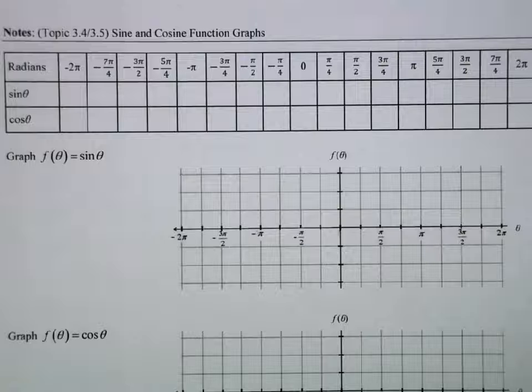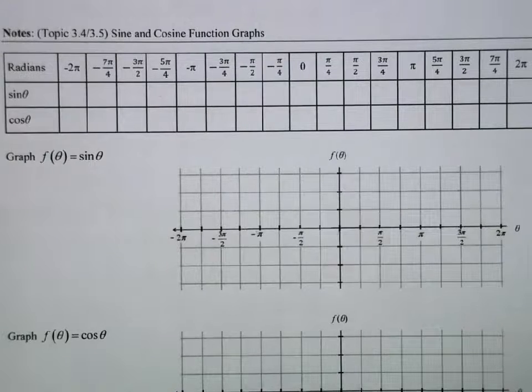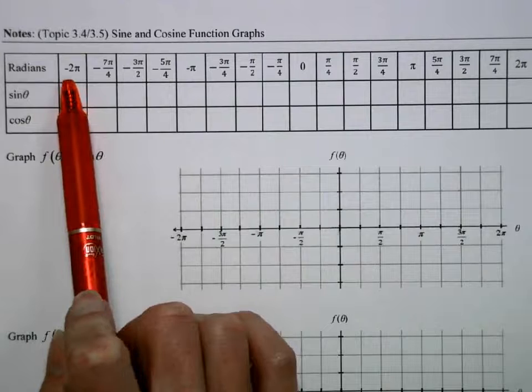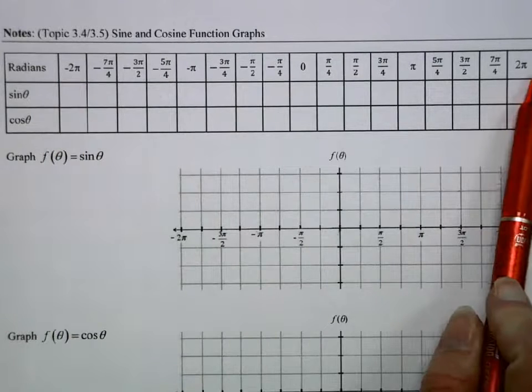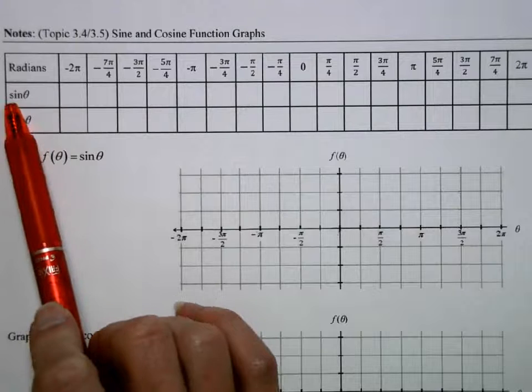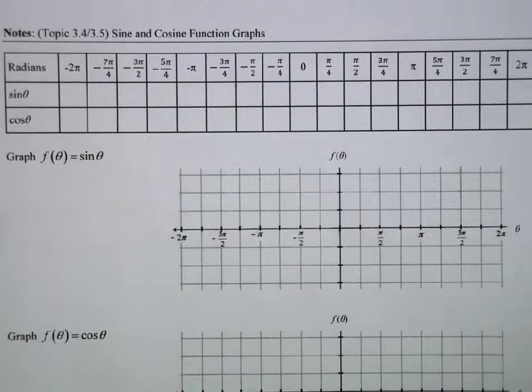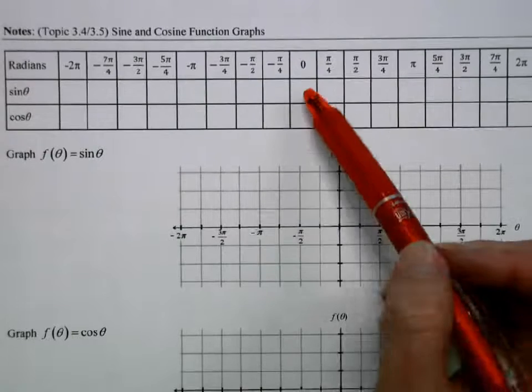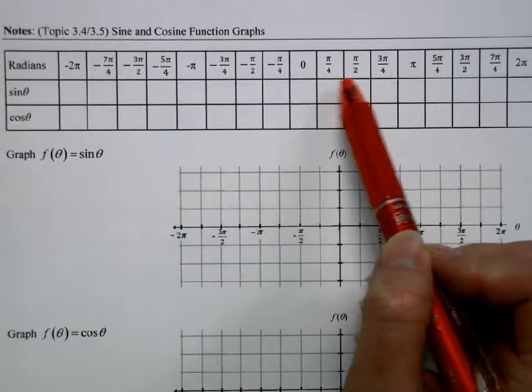So I'm going to start by just plotting some points. I have a table of values here that goes from negative 2π up to positive 2π. From our unit circle, we can get the sine values by finding the y's at these particular values. I've selected going up by π over 4.